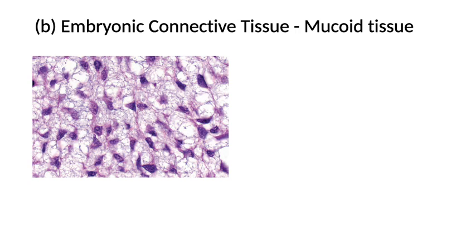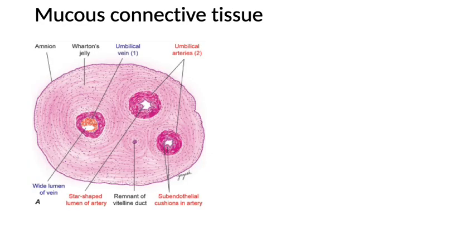Embryonic connective tissue or mucoid tissue: mesenchyme is the embryological tissue from which all types of connective tissue are derived. Mesenchymal cells are irregular in shape — star-shaped or fusiform — with delicate branching cytoplasmic extensions forming a network. The nuclei have dispersed chromatin and nucleoli present. Matrix consists of ground substance that stains blue with no mature fibers. This is a typical embryonic connective tissue, and the classic example is the umbilical cord.